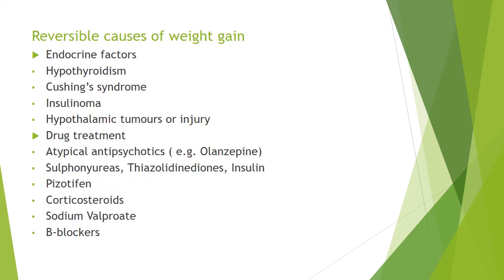Reversible causes of weight gain include endocrine factors such as hypothyroidism, Cushing's syndrome, insulinoma, and hypothalamic tumors or injury. Drug treatments that can cause weight gain include atypical antipsychotics (e.g., olanzapine), sulfonylureas, thiazolidinediones, insulin — all of which are treatments for diabetes — as well as pizotifen, corticosteroids, sodium valproate, and beta-blockers. When you see someone who has gained weight recently — in 6 months or 1 year — you should consider these causes and do some basic tests to rule them out in every case of obesity.